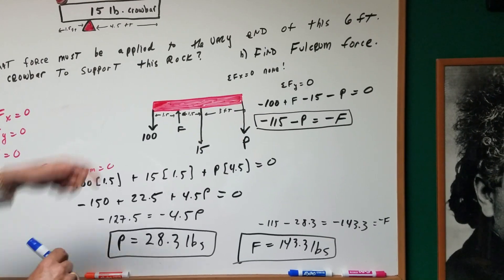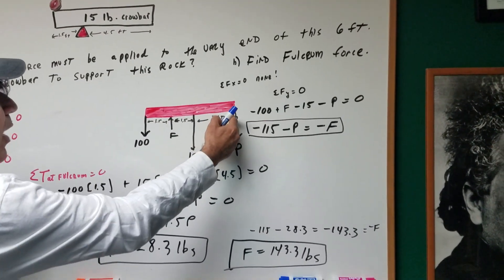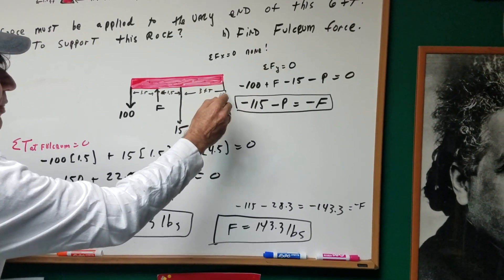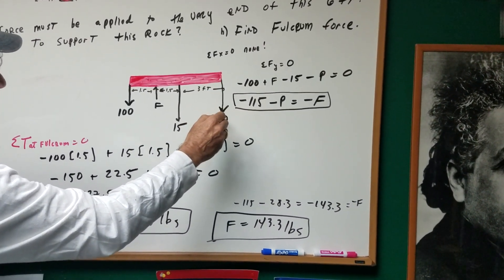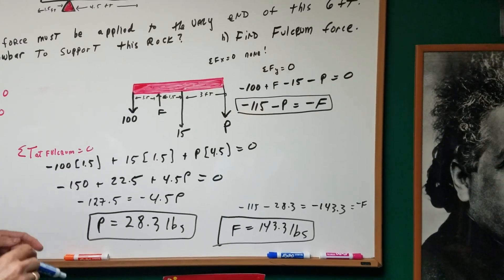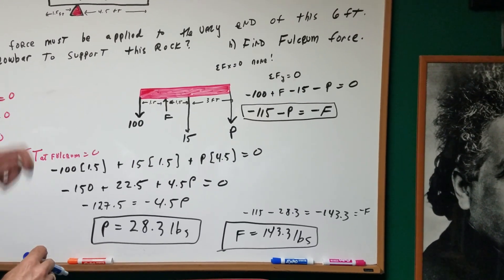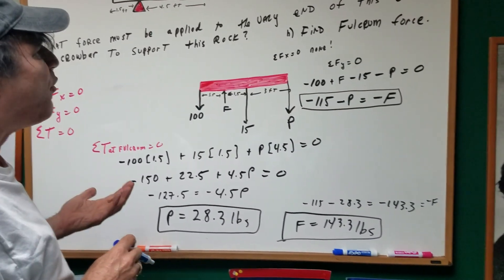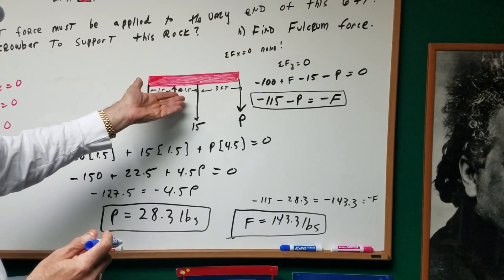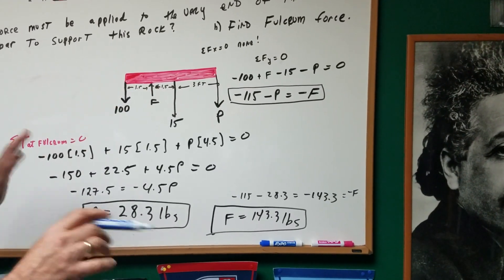We want to know what force must be applied at the opposite end. Say it's another rock. So I'm going to assume that that force, which I'll call P, is pushing down at the far right. Where do I begin? After I draw my free body diagram, I first go for my first rule. The sum of the forces in the x direction is 0. If you look with your eyes, there are none. There's nothing going on in the x direction, so move on.